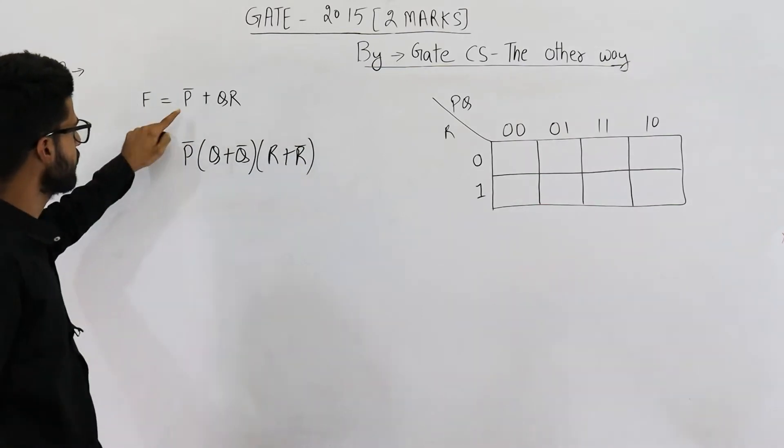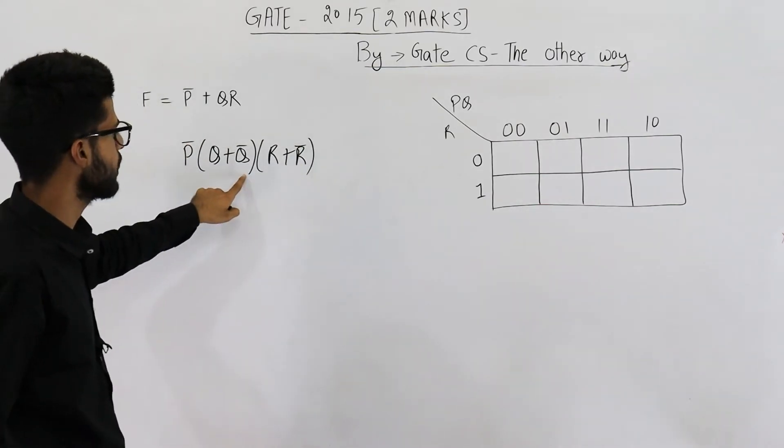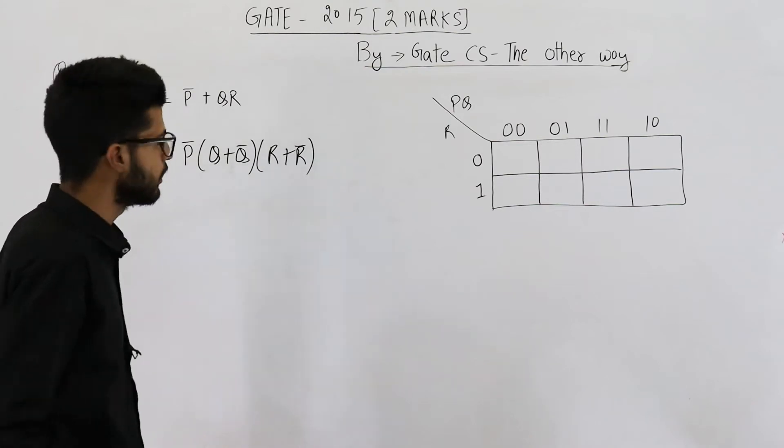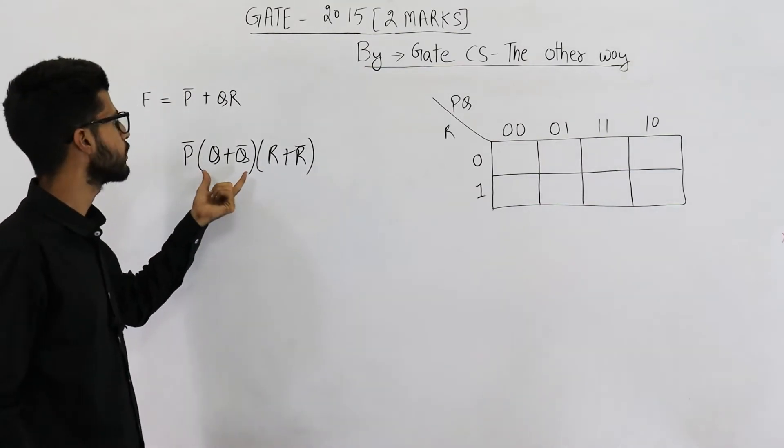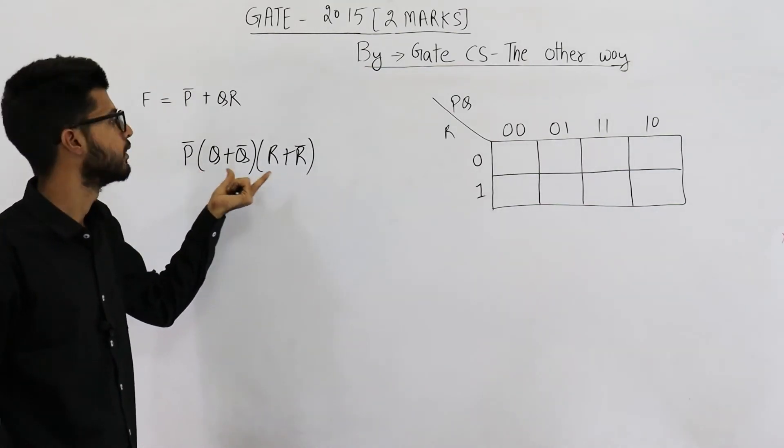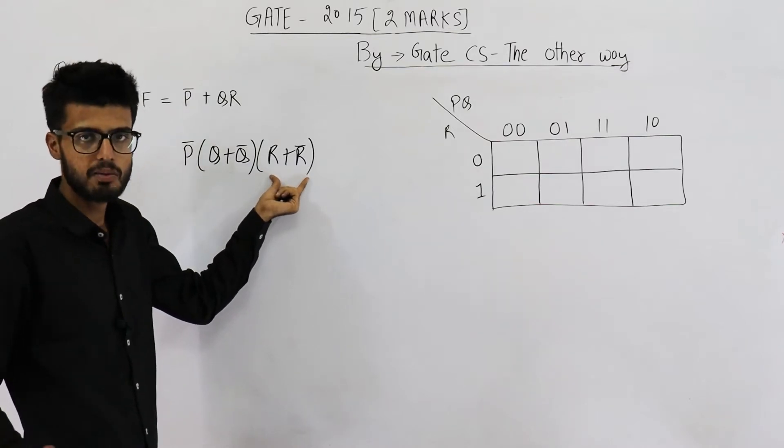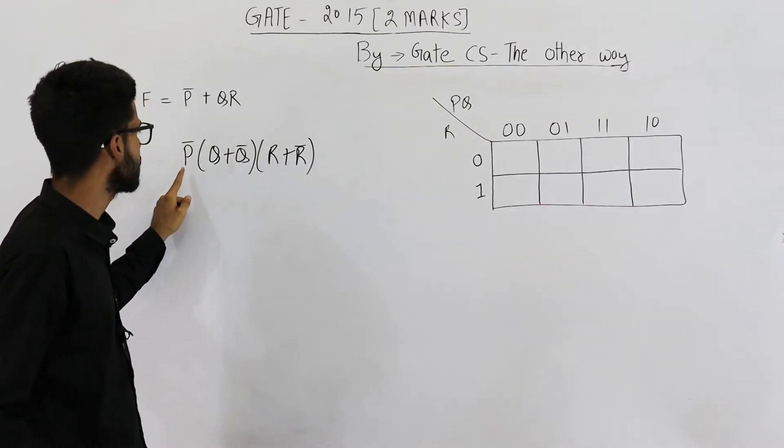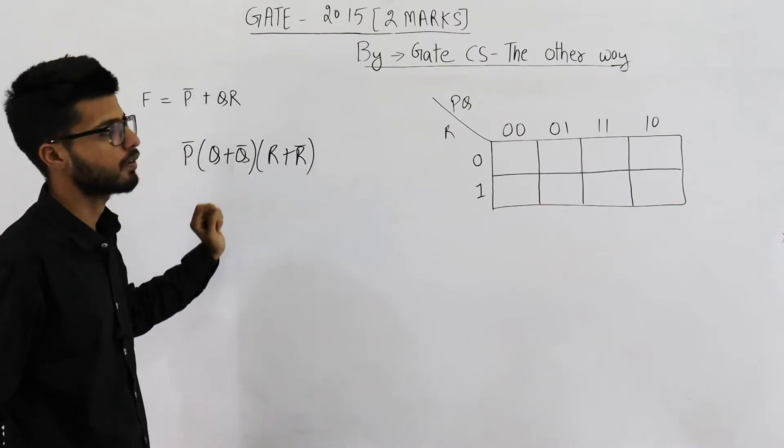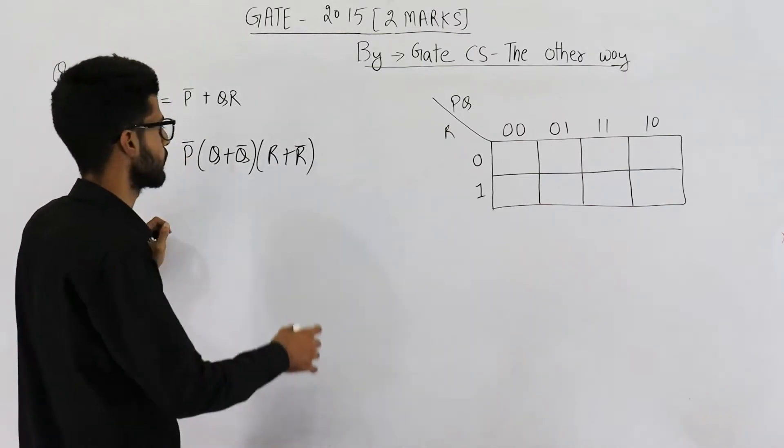See, I have written this P bar as P bar into (Q + Q bar) into (R + R bar). I can write so because Q + Q bar will become 1, R + R bar will also become 1. So we are writing P bar dot 1 dot 1, which is obviously P bar.